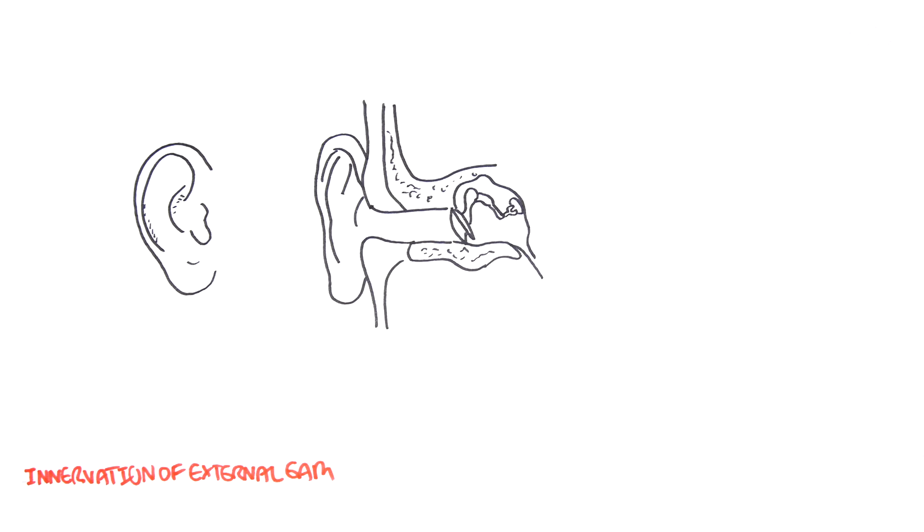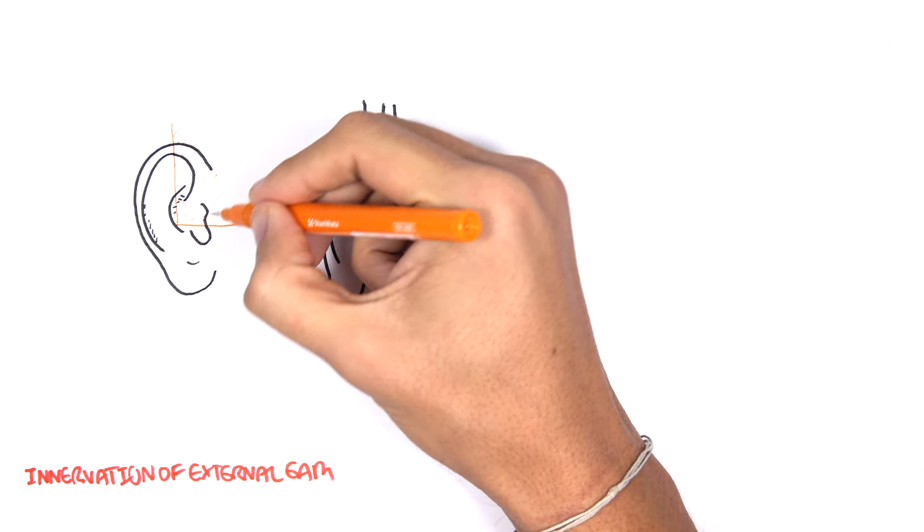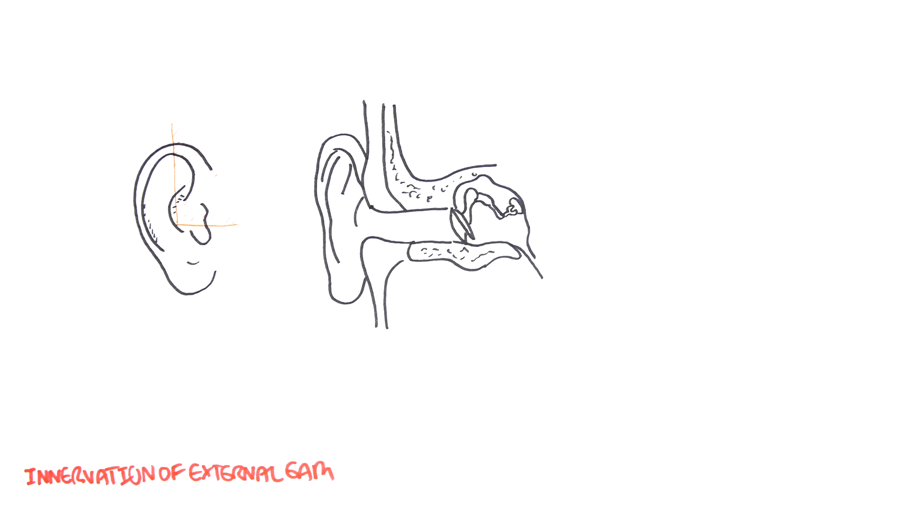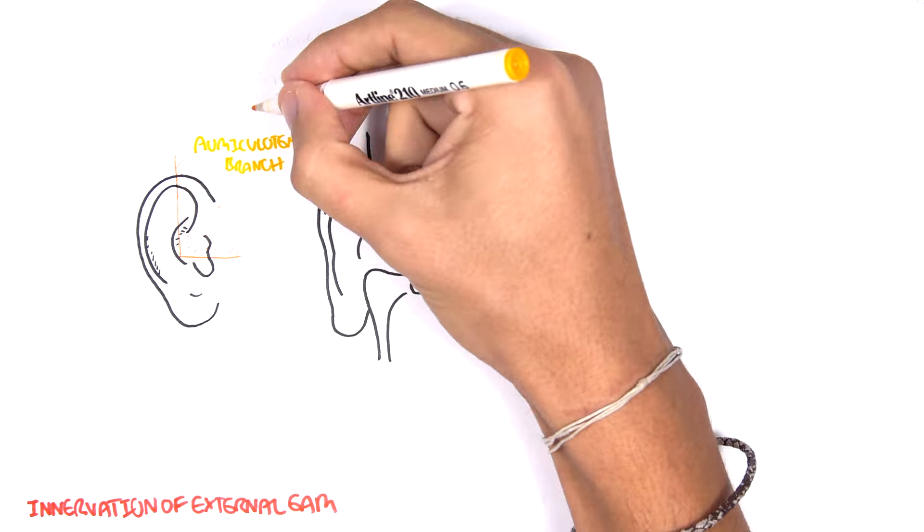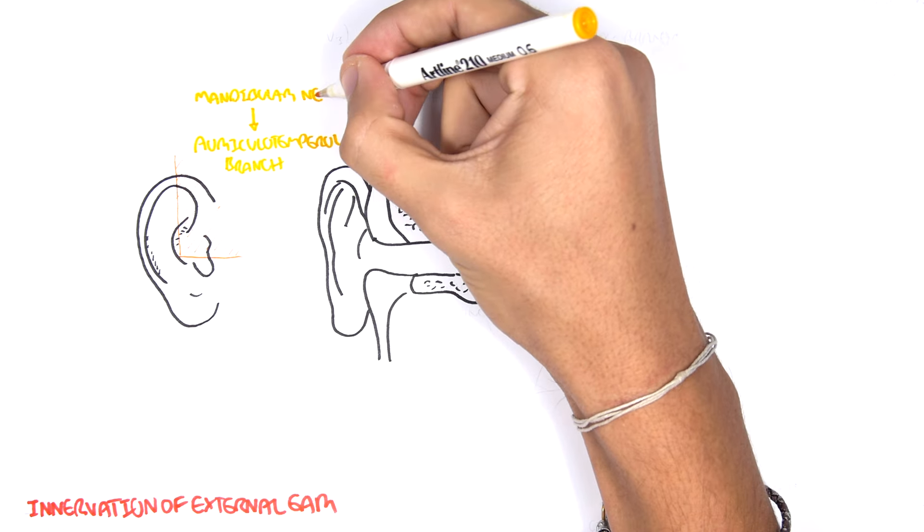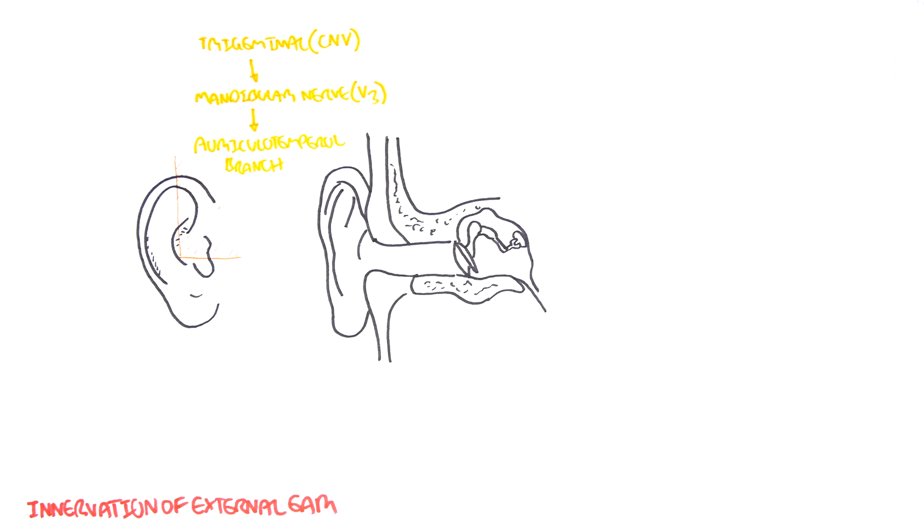So here we have the auricle. There are many nerves innervating the external ear, and these are your auriculotemporal branch of the mandibular nerve, V3, which is a branch of the trigeminal nerve, cranial nerve 5.